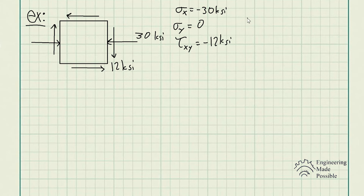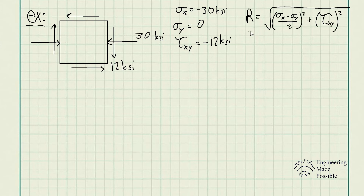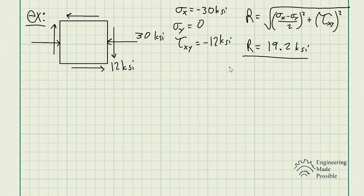We first solve for the radius of Mohr's circle using the radius equation. Solving accordingly gives R = 19.2 ksi. Then we solve for the average normal stress, which gives us -15 ksi. With these two values we can identify the center of Mohr's circle and draw it.